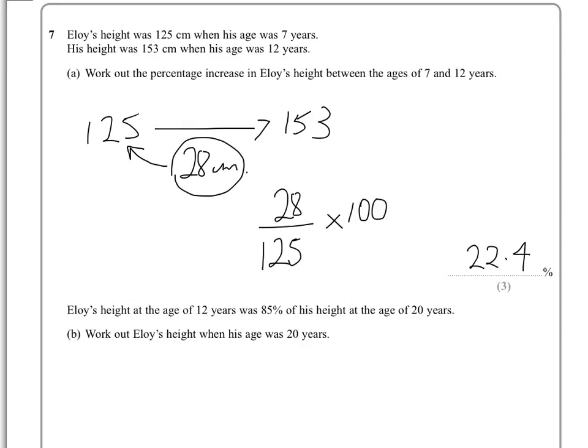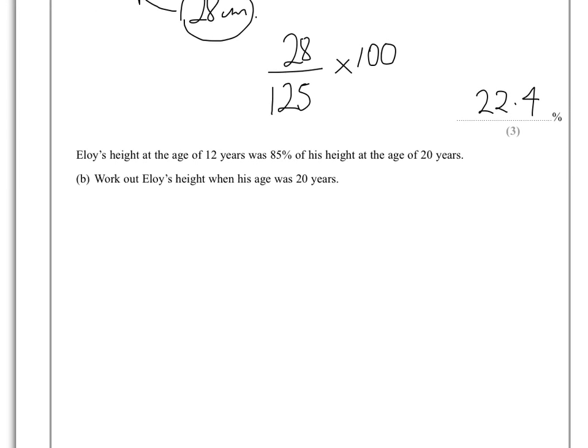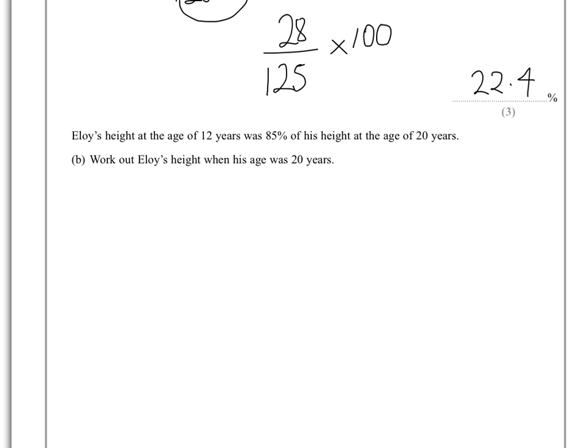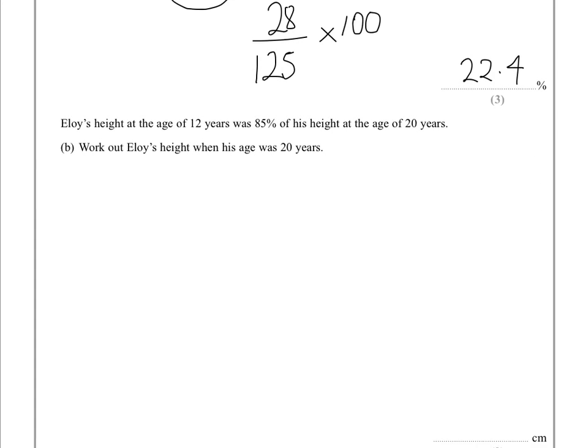Now we're told that Eloy's height at the age of 12 was 85% of his height at the age of 20, and we're asked to work out therefore what was his height when he was 20. So his height when he was 12 was 153.